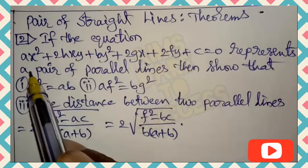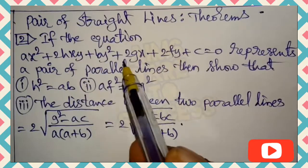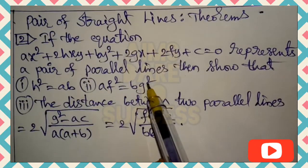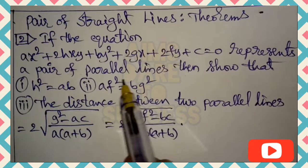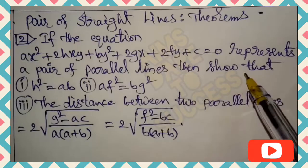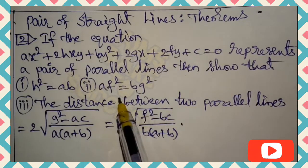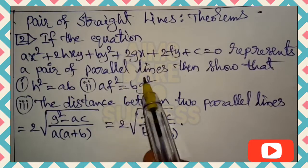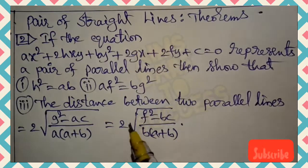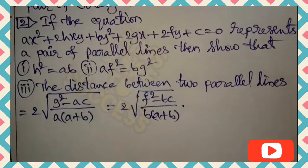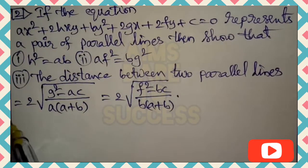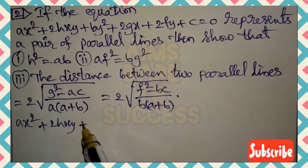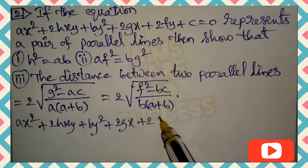Theorem 2: If the equation ax² + 2hxy + by² + 2gx + 2fy + c = 0 represents a pair of parallel lines, then show that: first, h² = ab; second, af² = bg²; third, the distance between the two parallel lines equals 2√(g² − ac) / [a(a+b)] = 2√(f² − bc) / [b(a+b)].